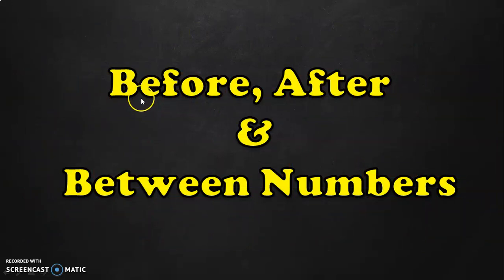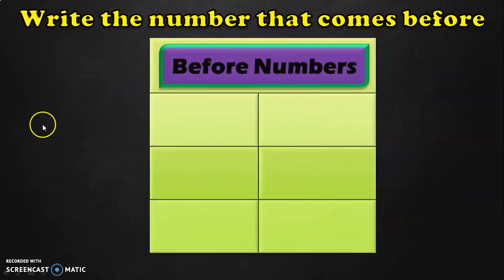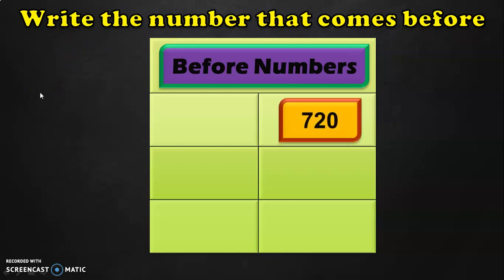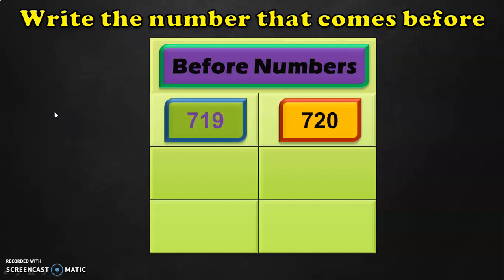We will be seeing how to write the before, after and between numbers. Let us begin with before numbers. What do you mean by before? Before means you will always do a backward counting. I will give you a number and you will have to do a backward counting and write the number that comes before the given number. Write the before number of 720. What is the number before 20? We know it is 19. So before 720 it is 719.